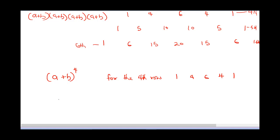So: 1 multiplied by a raised to power 4, b raised to power 0. Note: when a is raised to power 4, b is 0, so 4 plus 0 gives back 4. Plus the next coefficient 4, with a cubed and b to the power 1 — notice 3 plus 1 gives 4. Then 6 with a squared b squared — a is reducing while b is increasing.